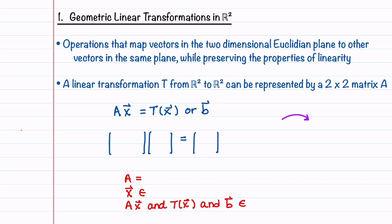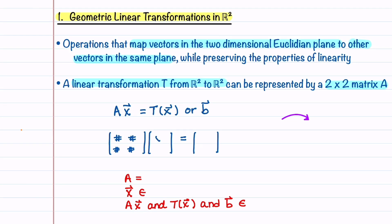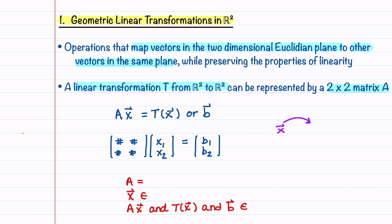The linear transformations that we'll be learning about in this video are geometric linear transformations in R2. These transformations map vectors in the two-dimensional Euclidean plane, R2, to other vectors in the same plane while preserving the properties of linearity. A linear transformation T from R2 to R2 can be represented by a 2 by 2 matrix A. Our matrix A will contain four numbers that multiply x1 and x2 to get our vector B, which contains components B1 and B2. Multiplying vector x by A transforms it into T of x, or B.